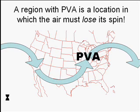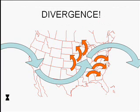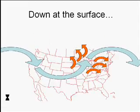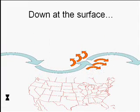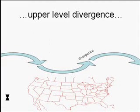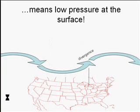Spreading out is a way of losing spin. Now, if this area of positive vorticity advection is an area in which the air must lose its spin, it's apparently an area where the air must spread out. We don't say spread out in meteorology — we say divergence. There's an area of divergence associated with that area of positive vorticity advection. That's something to write down in your notes: areas that are experiencing positive vorticity advection are experiencing upper level divergence. Now, if you're experiencing upper level divergence, down at the surface, your upper level divergence means low pressure at the surface.